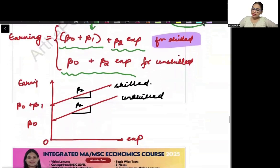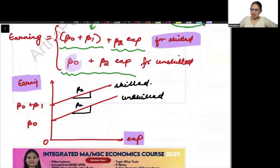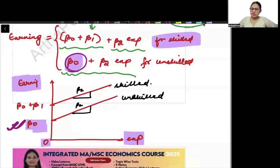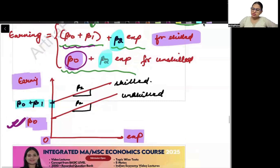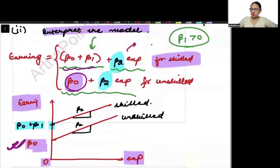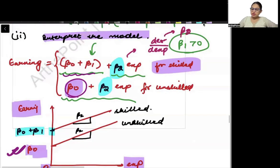Now I have tried to plot this, taking earning on the vertical axis and experience on the horizontal axis. For an unskilled worker the base salary is beta 0 — when experience is 0, earning is beta 0. For a skilled worker the base salary is beta 0 plus beta 1. Beta 2 tells us that when there is a change in experience, the change in earnings will on average be beta 2 units.